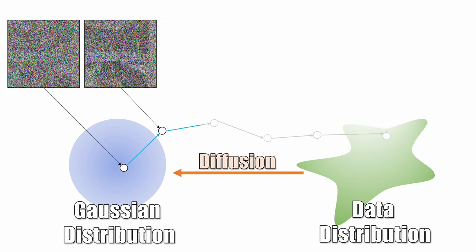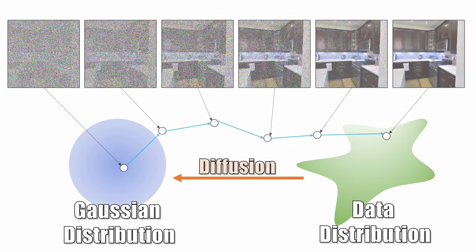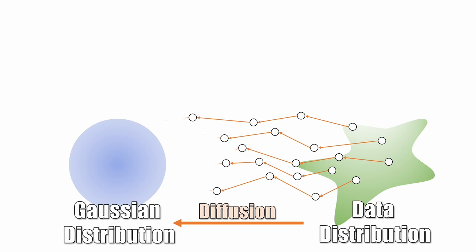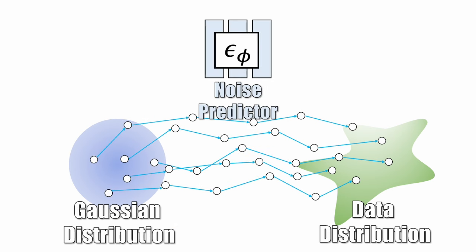If we traverse this path backward, we can transform a noise sample into a data sample. Let's collect lots of data and create many such paths.